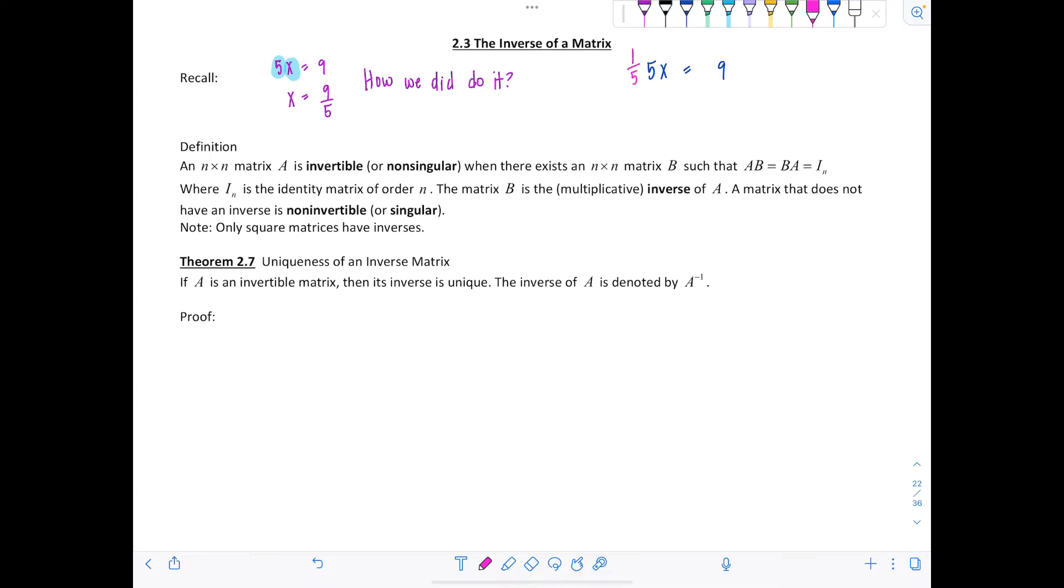We multiplied both sides by 1 fifth, same as dividing by 5. And essentially 1 fifth can be rewritten as 5 to the negative first power. This 5 to the negative first or 1 fifth is the inverse of 5 under the operation of multiplication. That leads us to our solution that x is equal to 9 fifths.